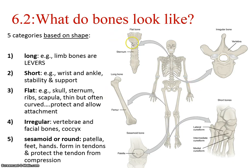We start off with these 206 bones and, like any large amount of information, we try to organize it based on similarities and differences. We can categorize bones of the body into five basic shapes: long, short, flat, irregular, and sesamoid or round.